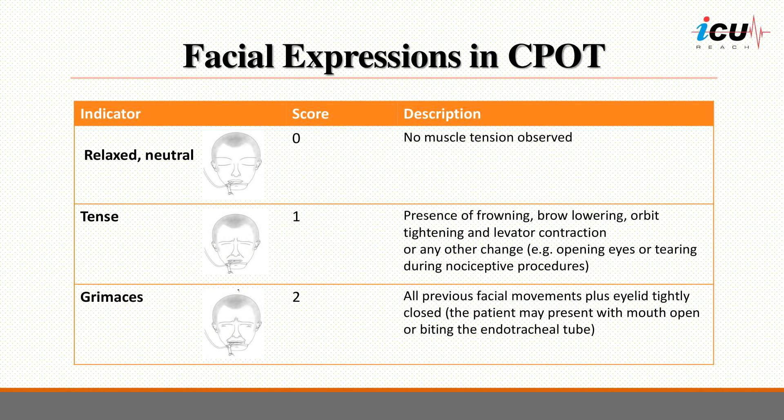Facial expression is one of the best behavioral indicators for pain assessment. A score of 0 is given when there is no muscle tension observable in the patient's face. A score of 1 consists of a tense face, usually exhibited as frowning or brow lowering. A score of 2 refers to grimacing, which is a contraction of the full face including eyes tightly closed and contraction of the cheek muscles. On occasion, the patient may open his or her mouth, or if intubated, may bite the endotracheal tube. Any other change in facial expression should be described in the chart and given a score of 1 if different from a relaxed or grimacing face.